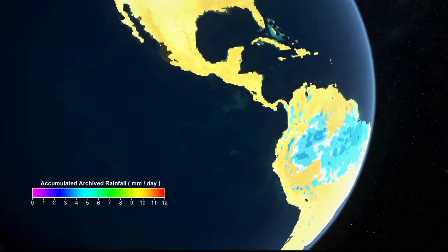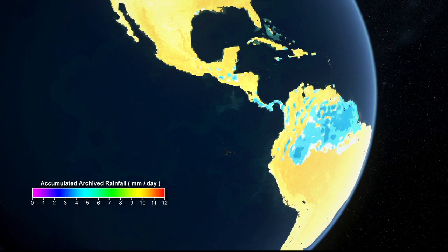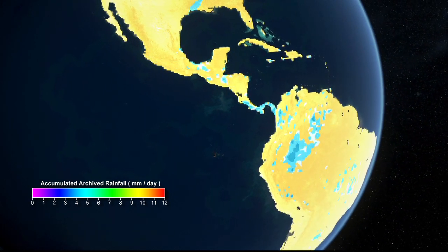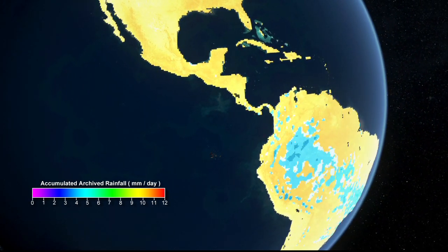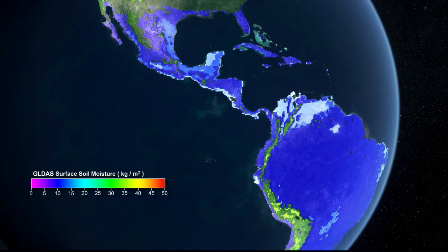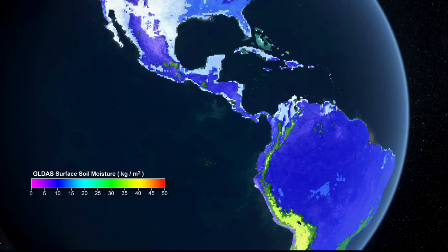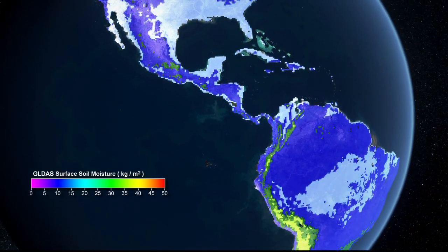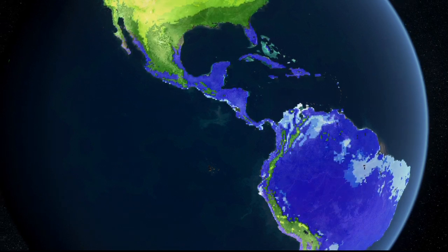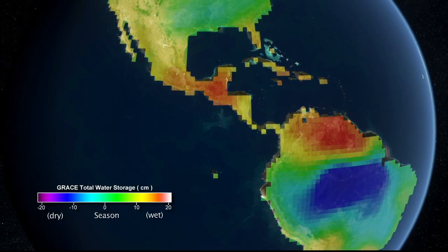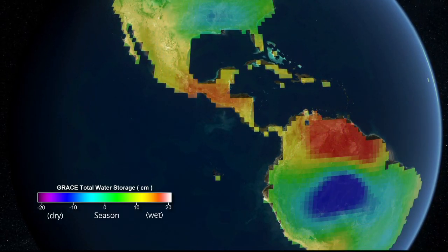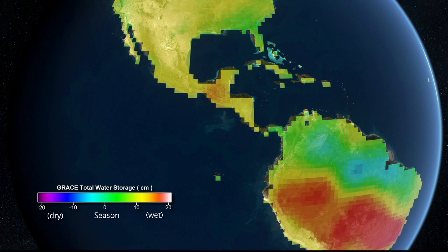Precipitation is concentrated in some parts of the world and scarce in others. It can vary substantially from season to season and from year to year. Water that falls on the land surface as precipitation is stored within snowpacks, lakes, reservoirs, soils, and underground aquifers.